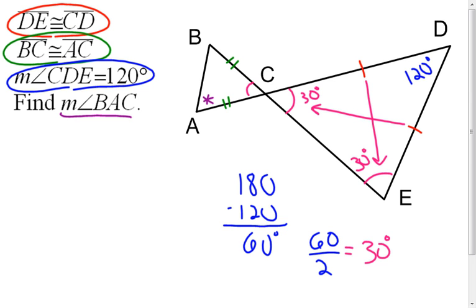I look over here at angle BCA is vertical to angle DCE. Therefore, this one's going to have to be a 30 degree angle.